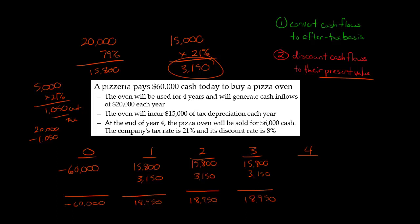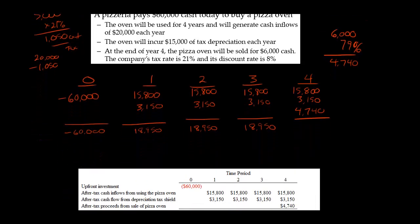The fourth year, we've got one little difference. So we've got $15,800, we've got $3,150, but then we sell the machine, we have a gain of $6,000. That's going to be taxed. So we take $6,000 times one minus the tax rate, so that's 79%. That means we're going to get $4,740. After we pay tax on that gain, we're going to receive $4,740. I've got the solution here written a little bit better.